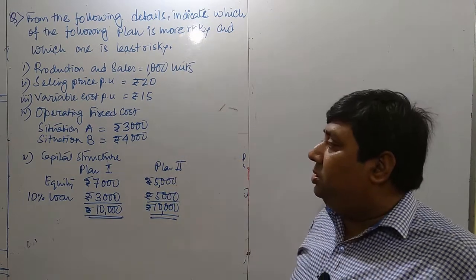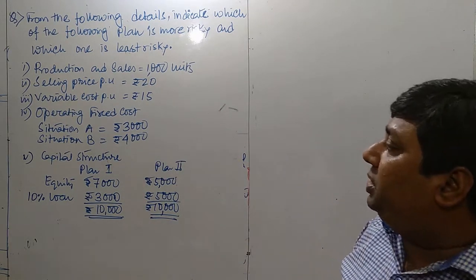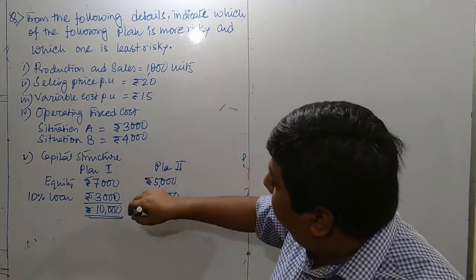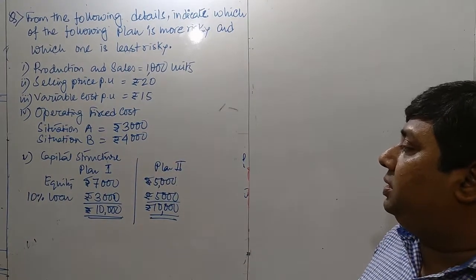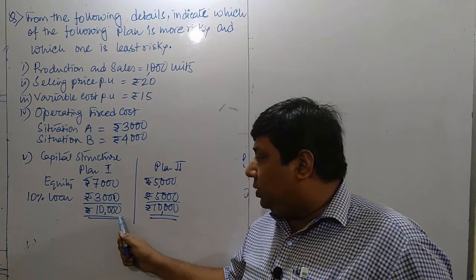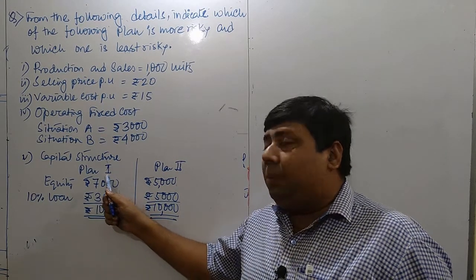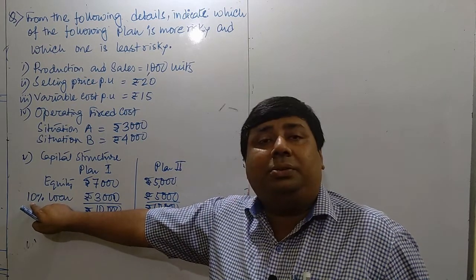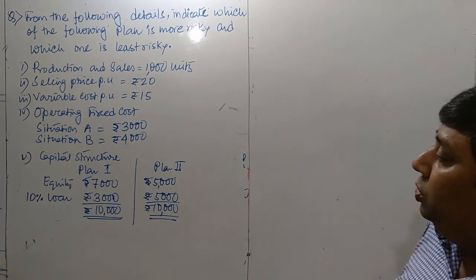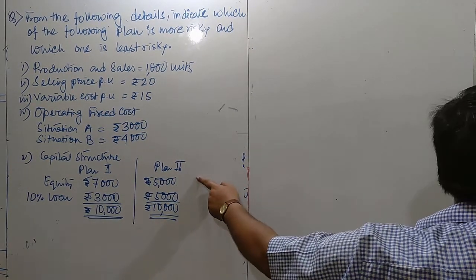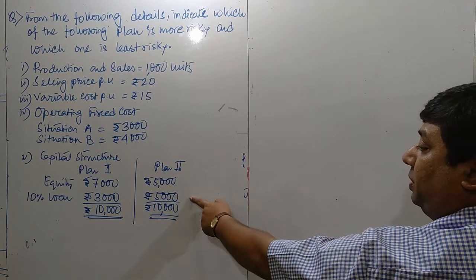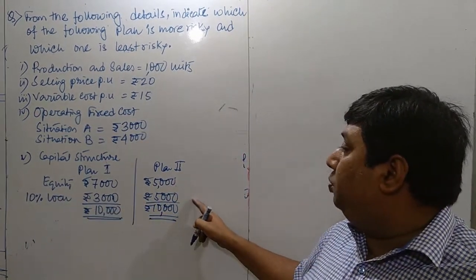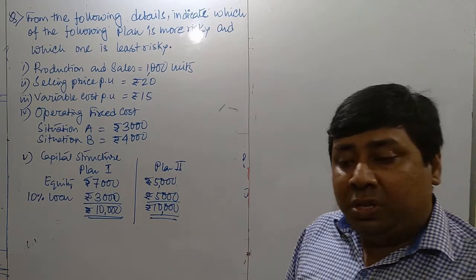According to the classification of fixed cost, situation A is Rs. 3000 and situation B is Rs. 4000. Total capital is Rs. 100,000. For the capital structure, there are two plans. In Plan 1, out of Rs. 10,000 capital, Rs. 7,000 is equity capital and Rs. 3,000 is loan capital on which we pay 10% interest. In Plan 2, Rs. 5,000 is equity capital and Rs. 5,000 is 10% loan capital.